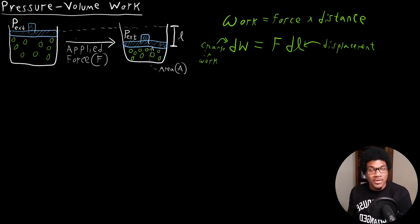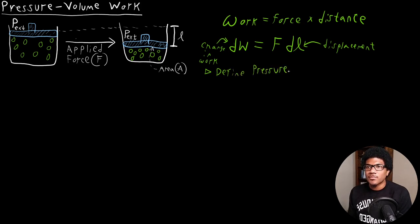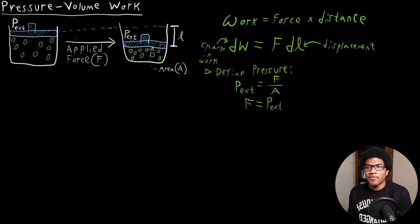We have an applied force being applied to this piston in our gas system, and DL is the displacement — however far that piston is displaced. The applied force is going to be related to the area and this external pressure. We know we can define pressure: P external is going to be force per unit area. Doing some algebra, force equals P external times the area.